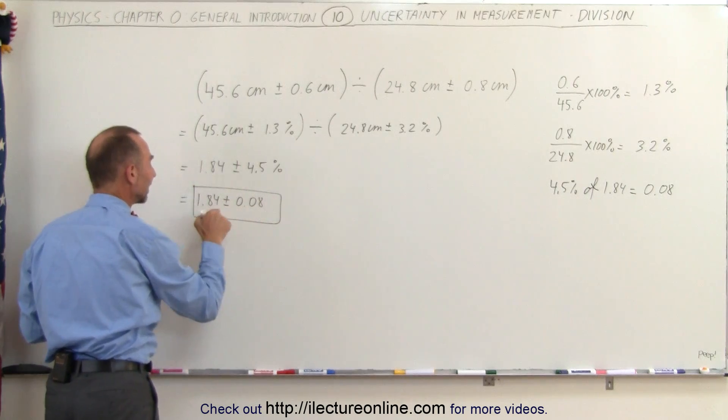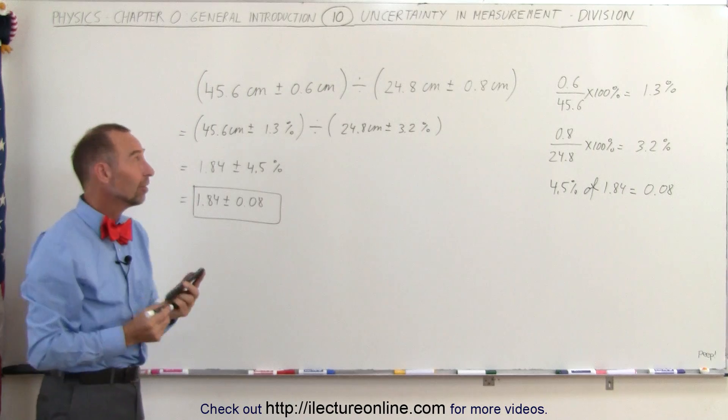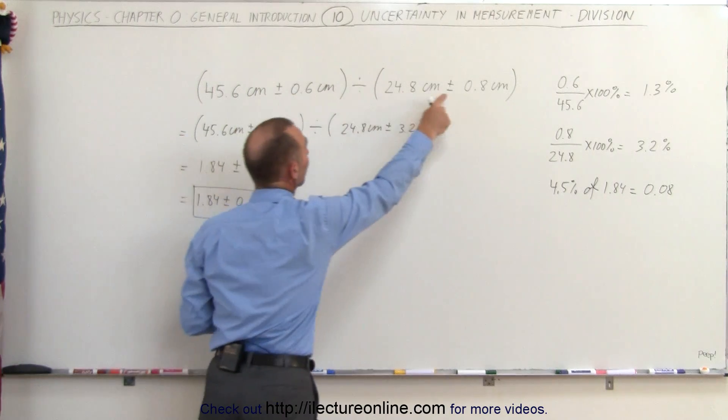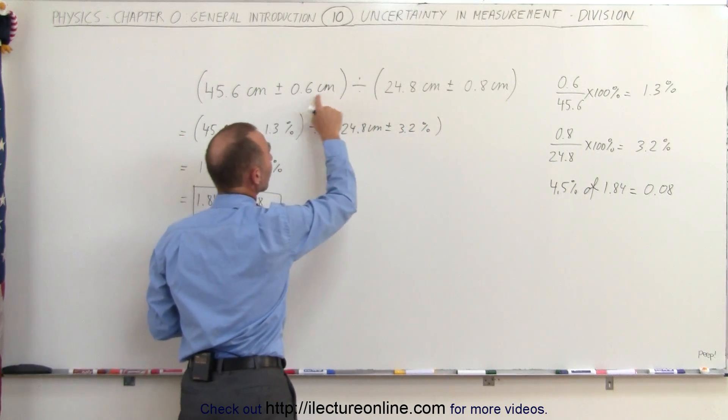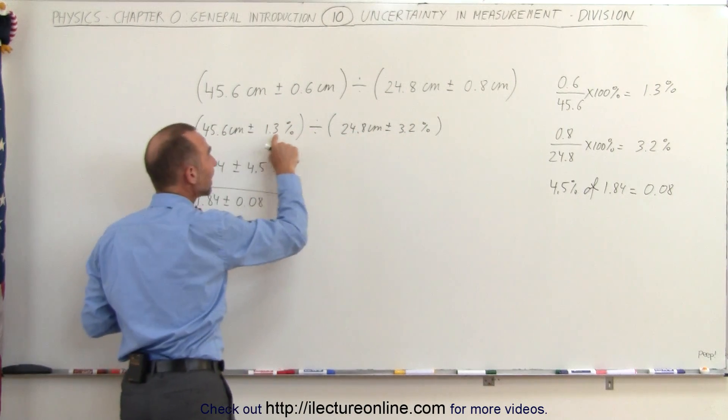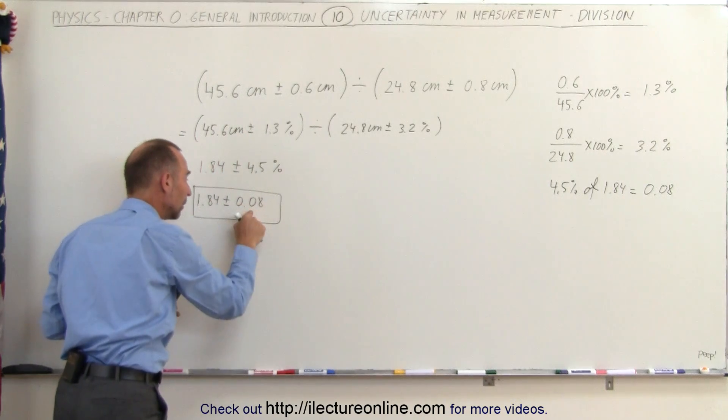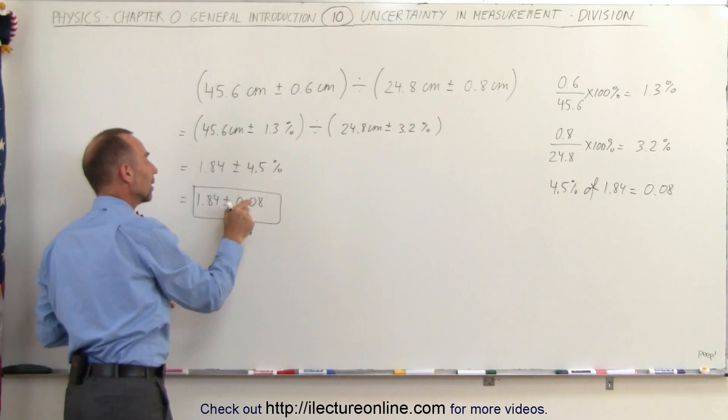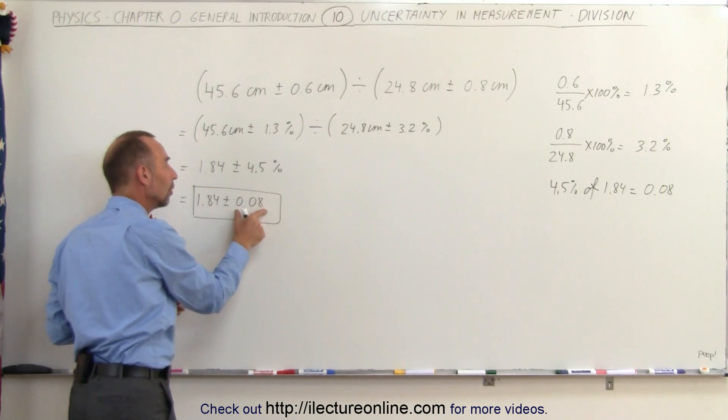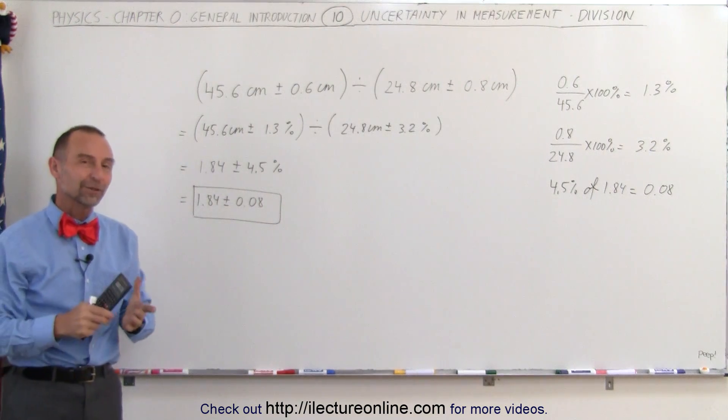So this then becomes the final answer relative to the division that we just did. So the rule is, you have uncertainties in the numbers that you're dividing. You then convert the uncertainties into percentages as a percent of the numbers that you measured. Then you add the uncertainties when you do the division. And then you reconvert back to a number so that the uncertainty is expressed in terms of a number rather than in terms of a percentage. And that's how we do that with division. Thank you.